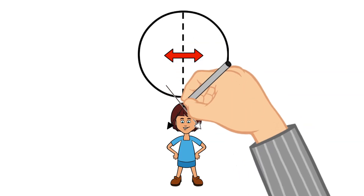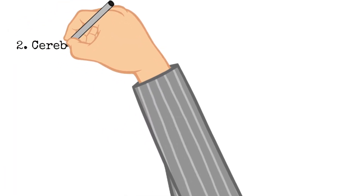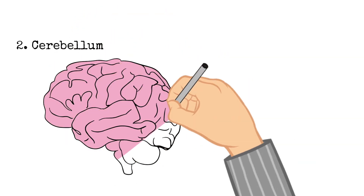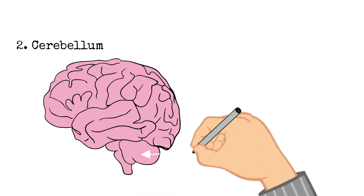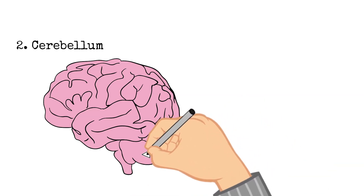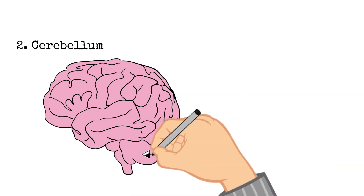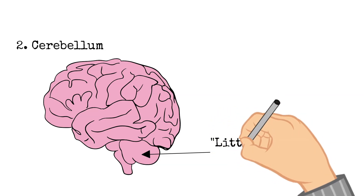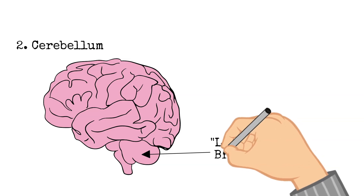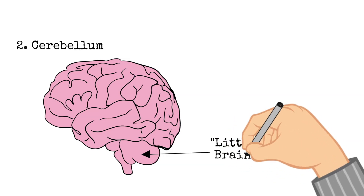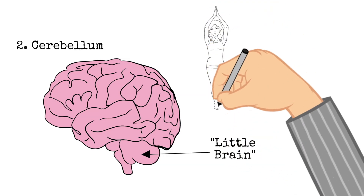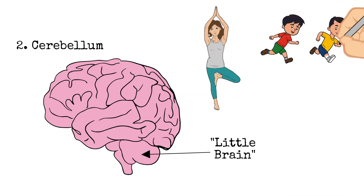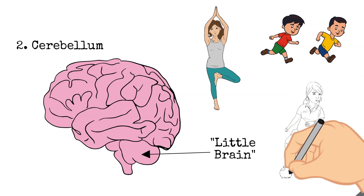The next part of the brain is the cerebellum. It is located behind the cerebrum and is given a nickname — it's called the little brain, because it looks like a miniature version of your cerebrum. This part of your brain is primarily responsible for balancing, movement, and coordination.